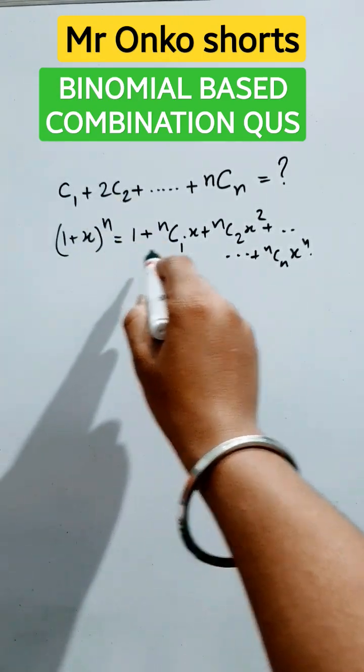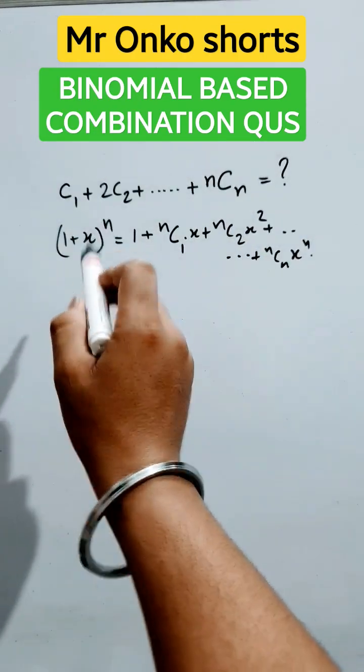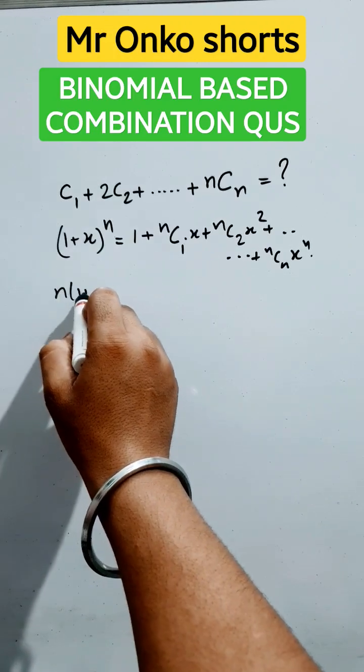Expansion (1+x)^n is of the pattern: 1 + nC₁x + nC₂x² + ... + nCₙxⁿ. Observing the requirement of this question, we have to differentiate both sides with respect to x. It will be n(1+x)^(n-1).